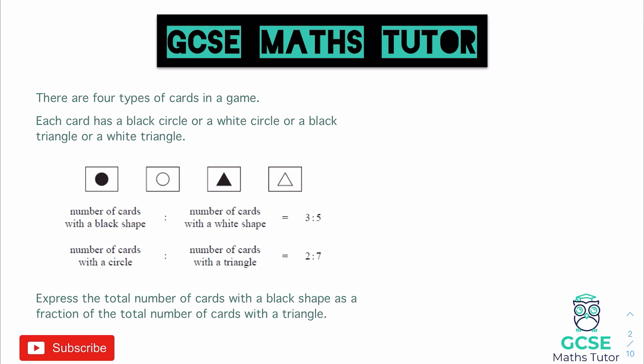So we're looking at writing a fraction. So the total number of cards with a black shape out of the total number of cards with a triangle. So we need to find the total number of cards that have a black shape and the total number of cards that are a triangle.